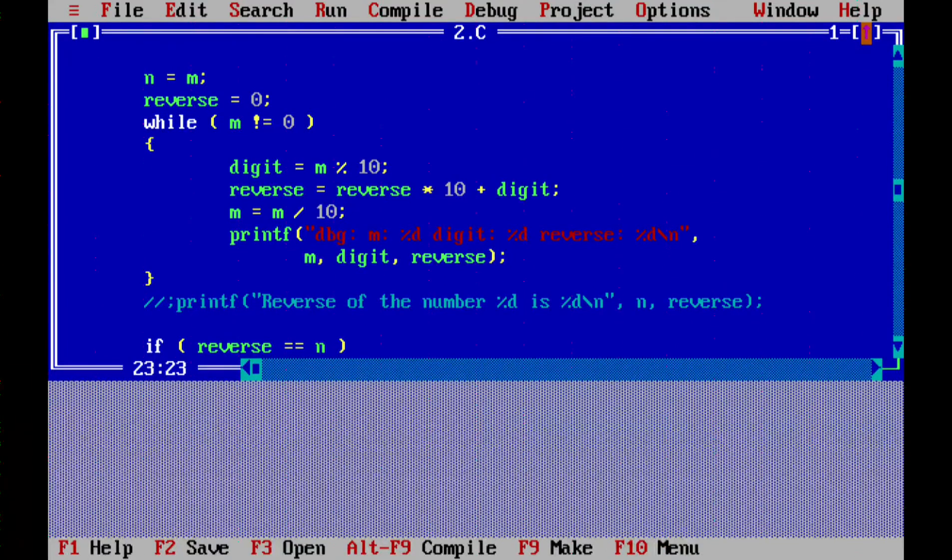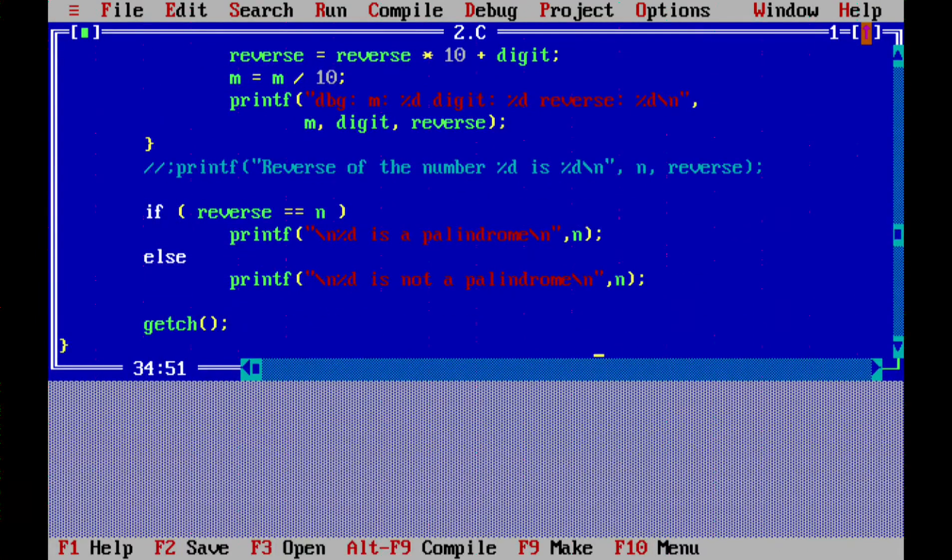With this, I have added a debug just for understanding. You could also, I highly recommend you people to add sufficient debugging. So every while loop, it will print what is the value of m, digit and reverse. And it would print - if reverse is equal to n, print it's a palindrome, else it is not a palindrome. Get ch is just a trick to make the output console stuck there and visible to you.